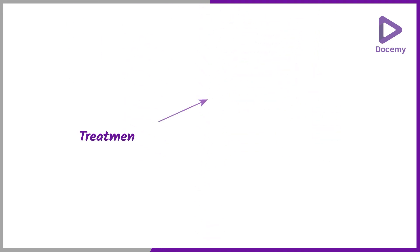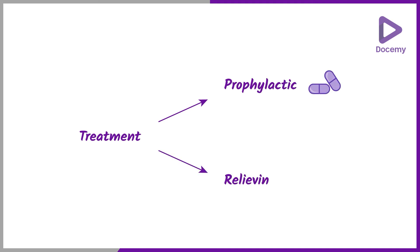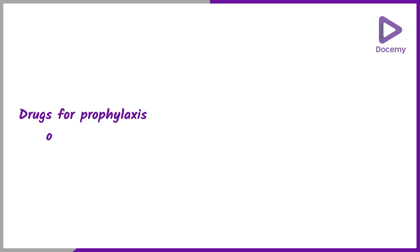Treatment comes under two strategies: one is called prophylactic treatment and another is called relieving treatment. These are the most common drugs used for prophylaxis of migraine — that is, to prevent further attacks.